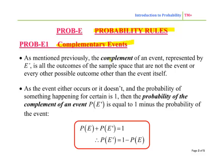Now as mentioned previously, the complement of an event is represented by E'. It's all possible outcomes of the sample space that are not the event or every other possible outcome other than the event itself. As the event either occurs or it doesn't, the probability of something happening for certain is 1. Then the probability of the complement of the event must be 1 minus the probability of the event happening.